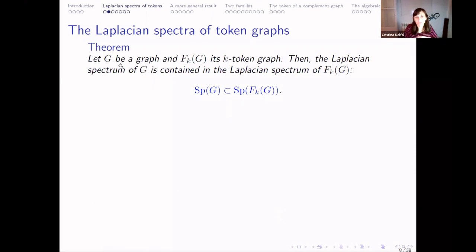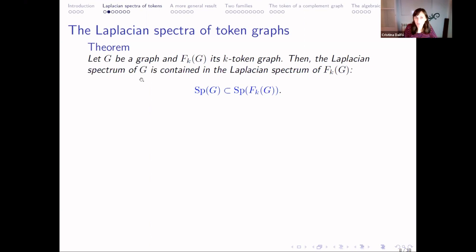We could prove that if G is a graph and Fk(G) is its k-token graph, then the Laplacian spectrum of G is contained in the Laplacian spectrum of its k-token graph. The original graph's spectrum is included in the spectrum of the k-token graph.